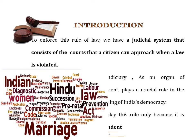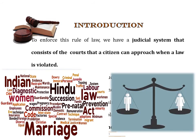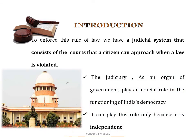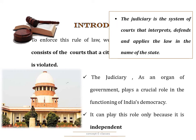In the last chapter we saw about some of the laws like the law specifying the age of marriage or the age at which a person can vote, and we also studied about the rule of law — that every person is equal under the law and no person is above the law, and if any person violates the law they should follow certain set of fixed procedures. To enforce or uphold this rule of law, we have a judicial system that consists of courts that a citizen can approach when a law is violated. We can define judiciary as a system of courts that interprets, defends and applies the law in the name of the state.